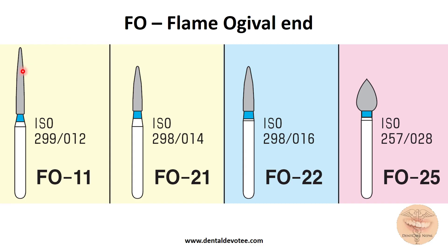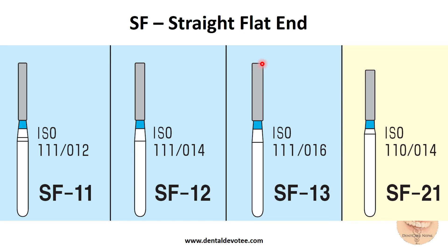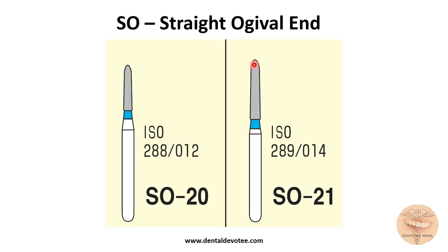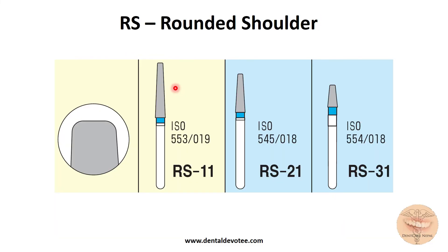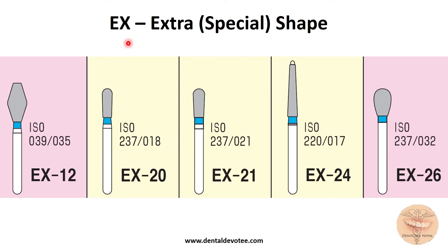Flame shaped burrs are identified as FO meaning flame ogival end. SF burrs are straight burrs with flat end. Burrs with straight head and ogival end are designated as SO. Likewise, straight burrs with round end are named SR, and those with rounded shoulder edge are identified as RS. Burrs which do not have any definite shape and have special shapes are categorized under the EX series.